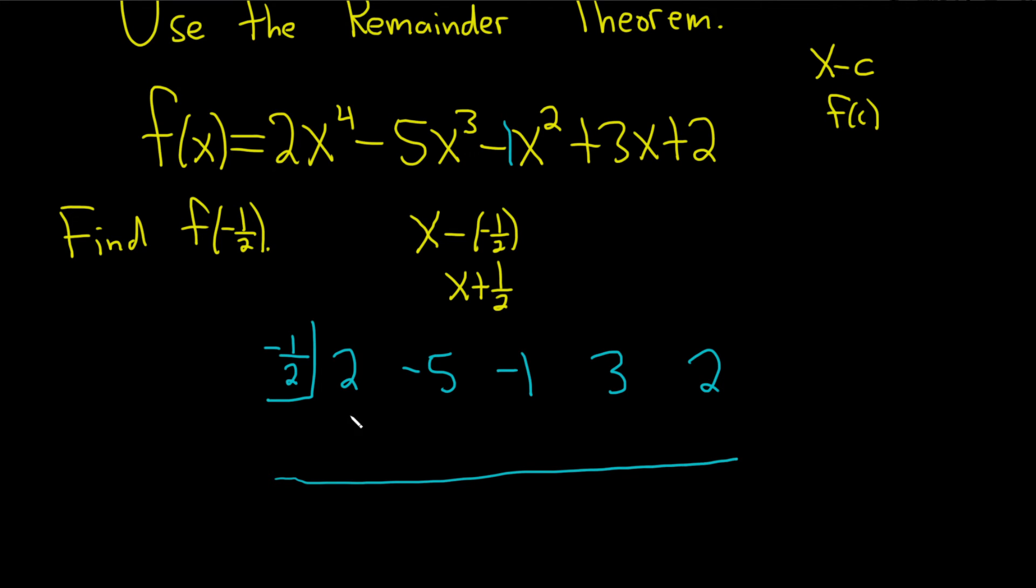All right, let's start the synthetic division process. So the first step is you just take this number and bring it down, so 2. And then you multiply. 2 times negative 1 half is negative 1. Oh, how convenient, right? The fraction went away.